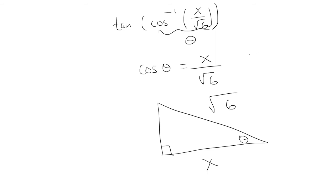The missing side we'll call y, so it's x squared plus y squared equals root 6 squared. So it's x squared plus y squared equals 6. I want to solve for y, so I better subtract x squared and then take the square root. So y is going to be square root of 6 minus x squared.